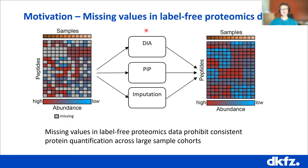There are a number of approaches to achieve this: by data independent analysis, peptide identity propagation — which I'll talk about extensively in this presentation — and imputation approaches to replace missing values with values. For each of these approaches, although they are powerful each in their own way, there are also some limitations.